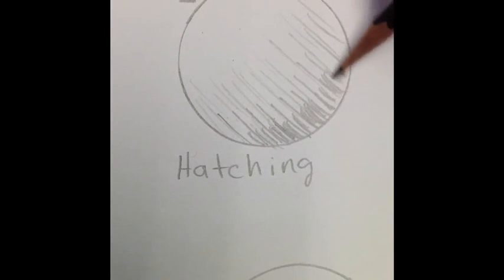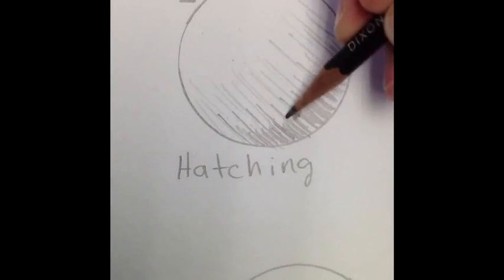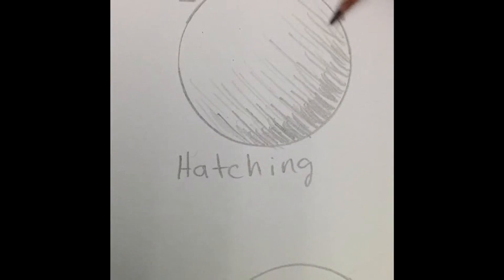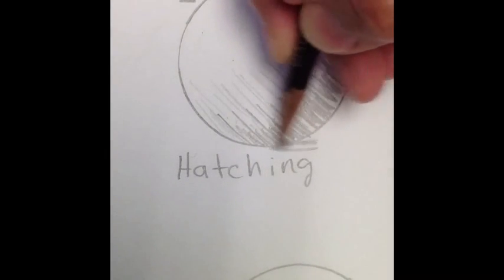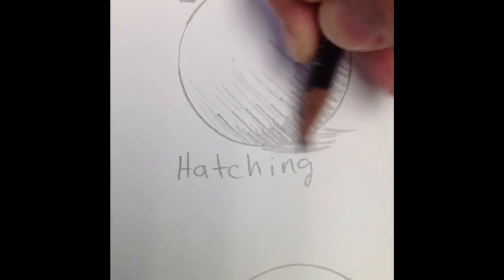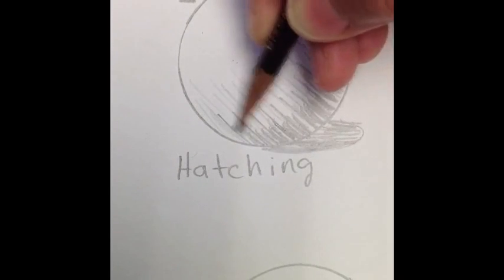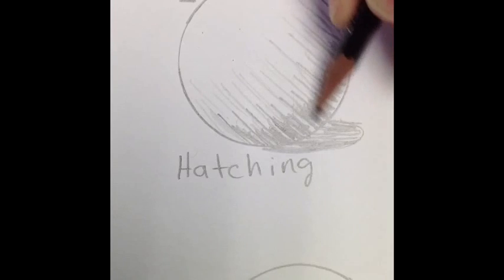The more lines you do towards the bottom, again all parallel lines in one direction, the more shading that will create to make the circle look like a sphere. Remember, shading helps make shapes look like forms. You want to pause the video and finish your hatching technique.